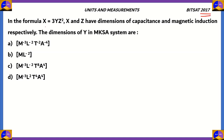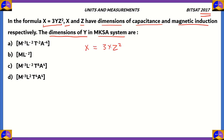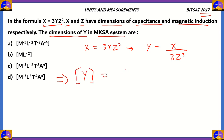This one was asked in 2017. In the formula x equals 3yz², x and z have dimensions of capacitance and magnetic induction respectively. The dimensions of y in the MKSA system are? For this particular question, let's look at the formula first: x equals 3yz². Our target is to find the dimensions of y, so we write the equation in terms of y: y equals x divided by 3z². The dimensions of y equal the dimensions of x divided by the square of the dimensions of z.